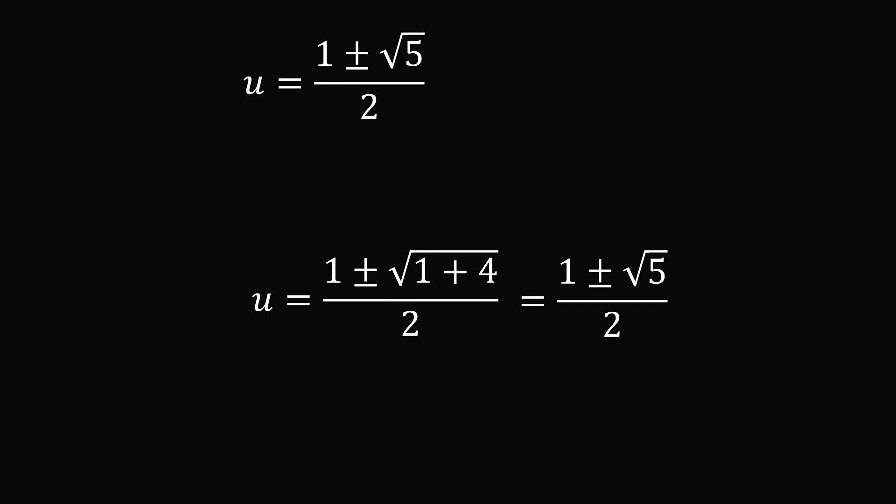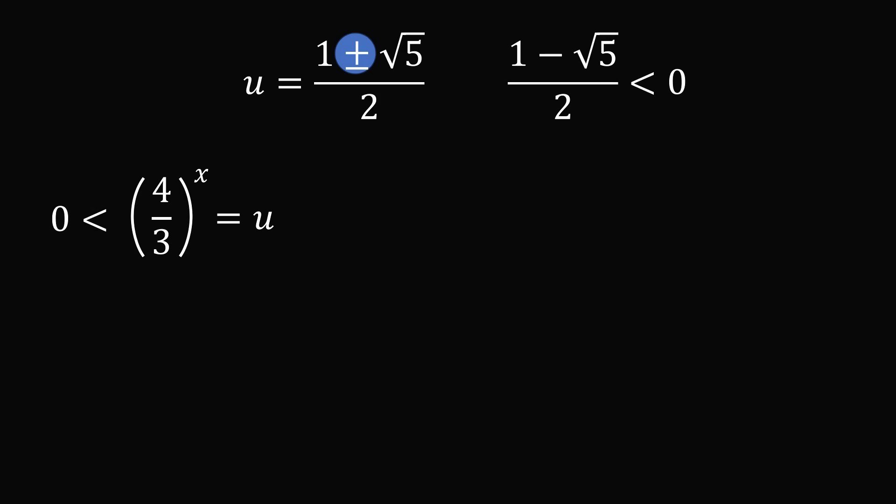So it seems we have two possibilities to consider for u. But let's see if we can simplify this further. We have plus or minus the square root of 5. Now u was substituted for (4/3)^x. When x is a real number, this is an exponential function that will always be greater than 0. But (1 - √5) / 2 is less than 0, so we can eliminate this possibility.